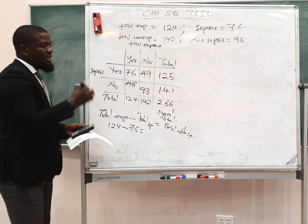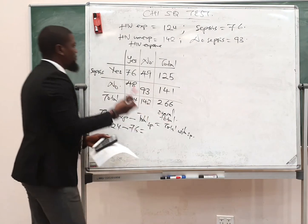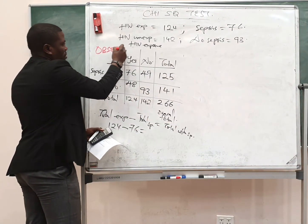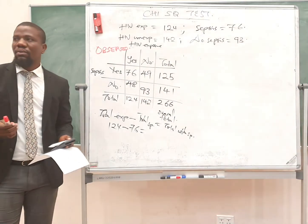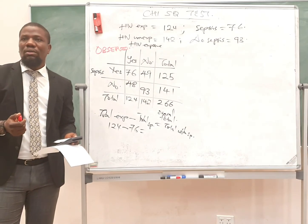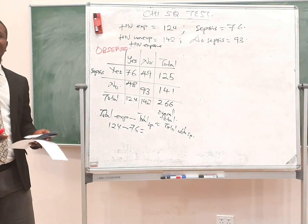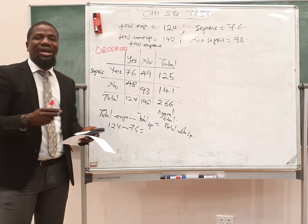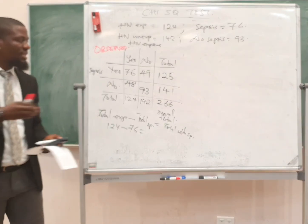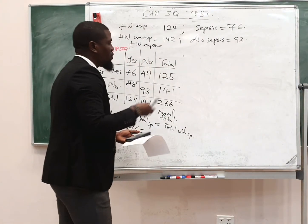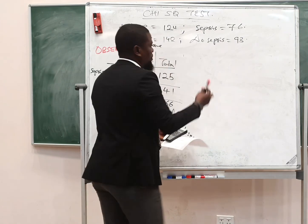What you are seeing here is the observed table — this is the table of what was actually observed. The question also asks us to show the expected table. Now let's try to work out the expected values.